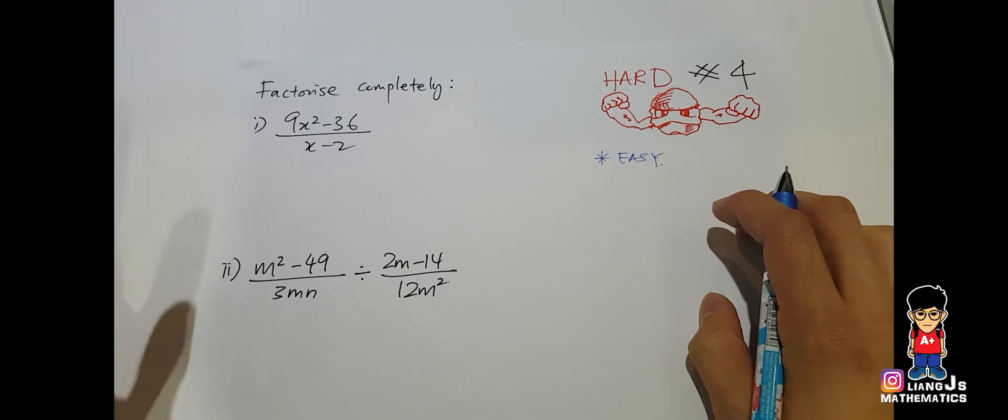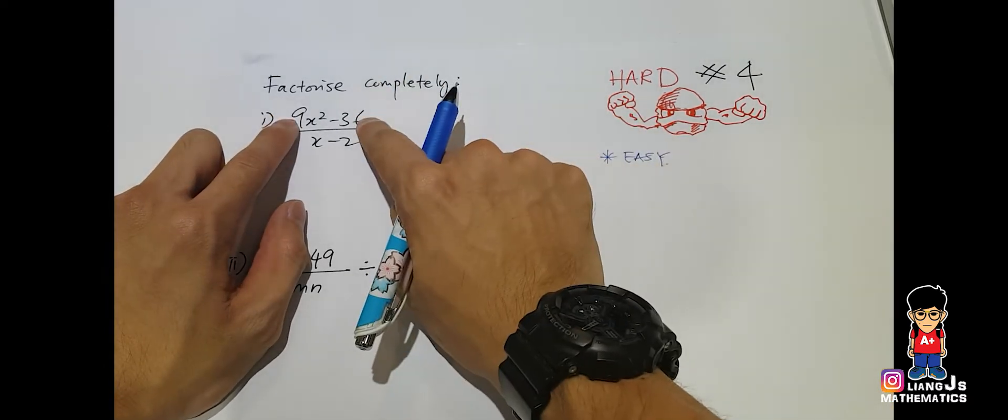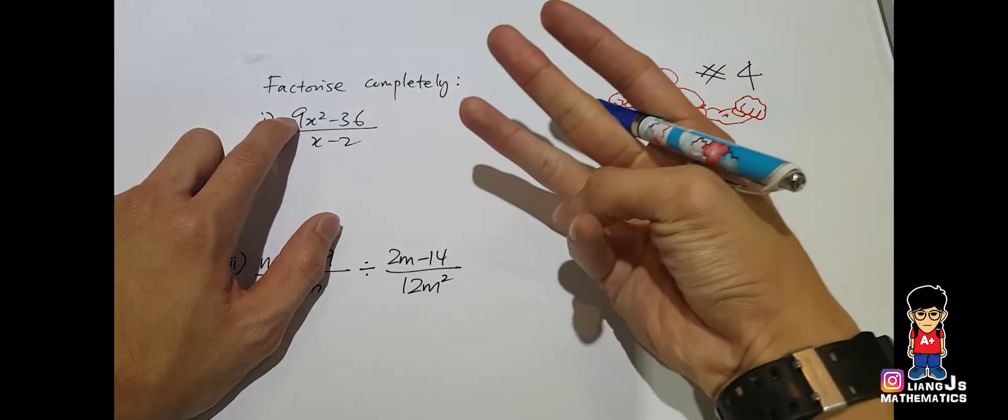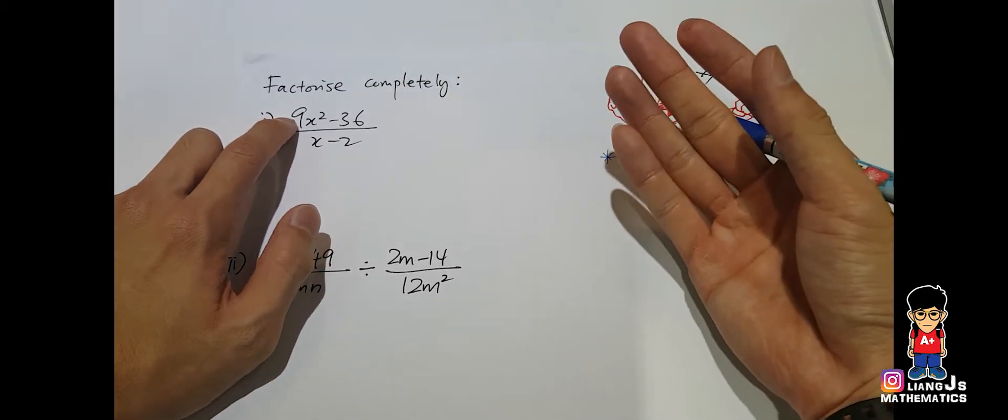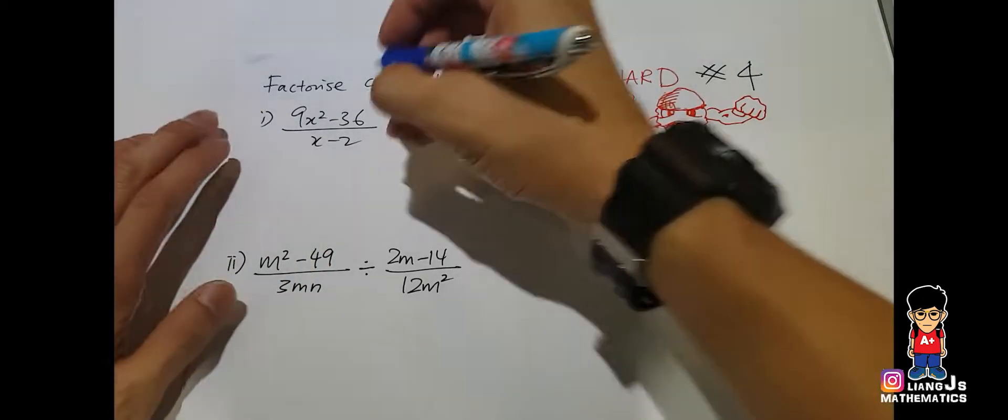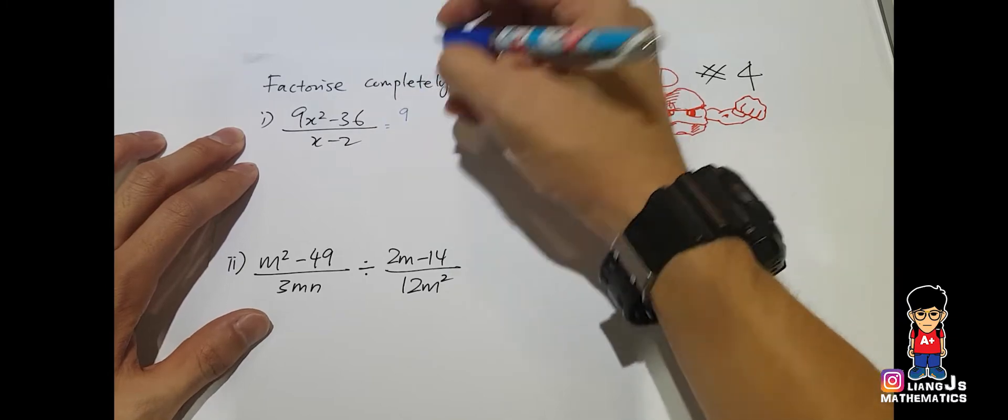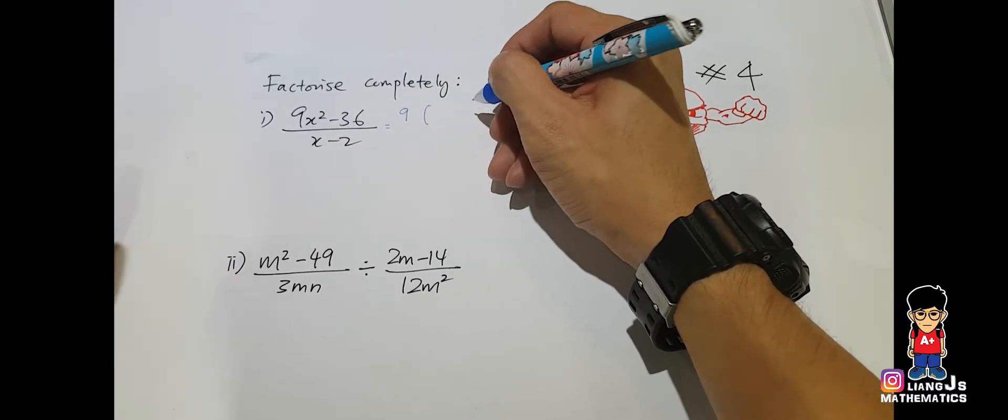Easy as in, for example, look at 9 and 36. Both of them can be divided by 3, 9. Okay, so I will go for maximum. Maximum will be, you will take out the 9 and you will have 1 and 4 inside, right?